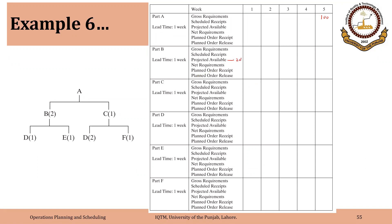All lead times are one week. Here we will see the child-parent relationship and we will use the bill of material to make the calculations. We need 100 A's to be available in week 5 and we have 20 Bs available.